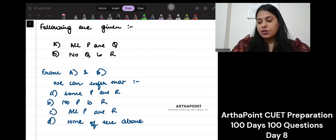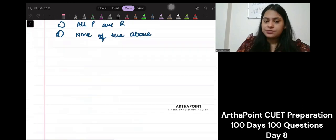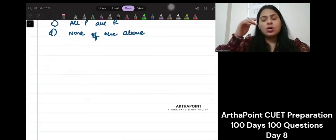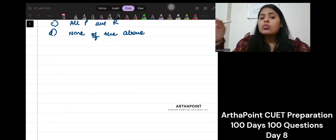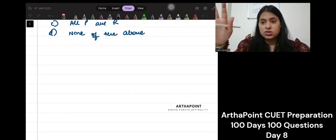So it says, following are given, all P are Q, no Q is R. So all P are Q, let's think. Can we say, when we say all P are Q, we need to either you can just directly go ahead and solve this or what you can do is you can also think of statements that follow this thing, right?